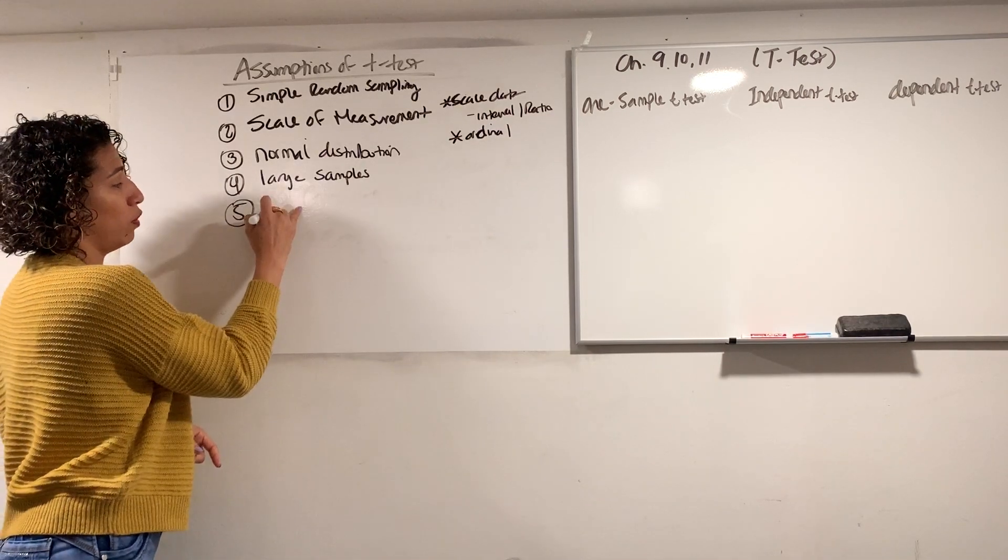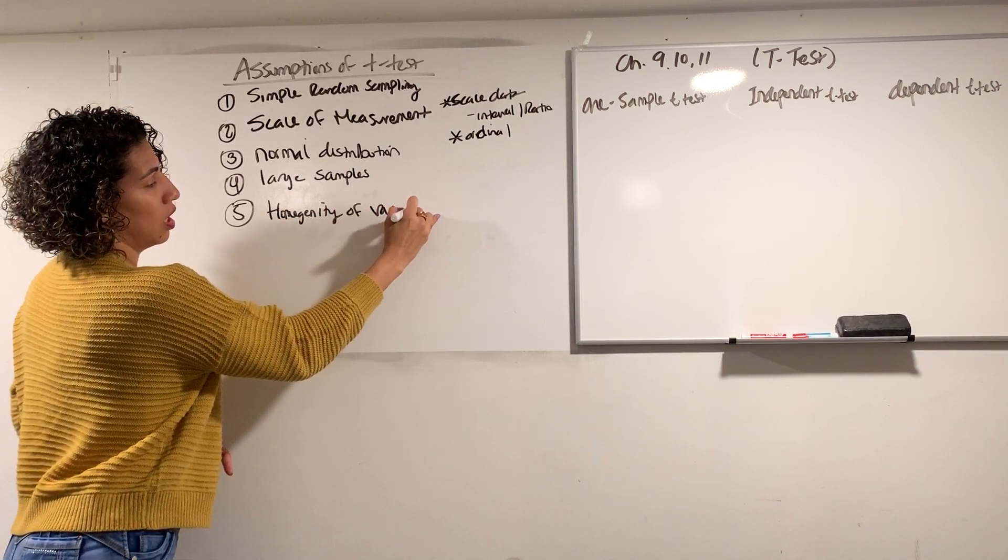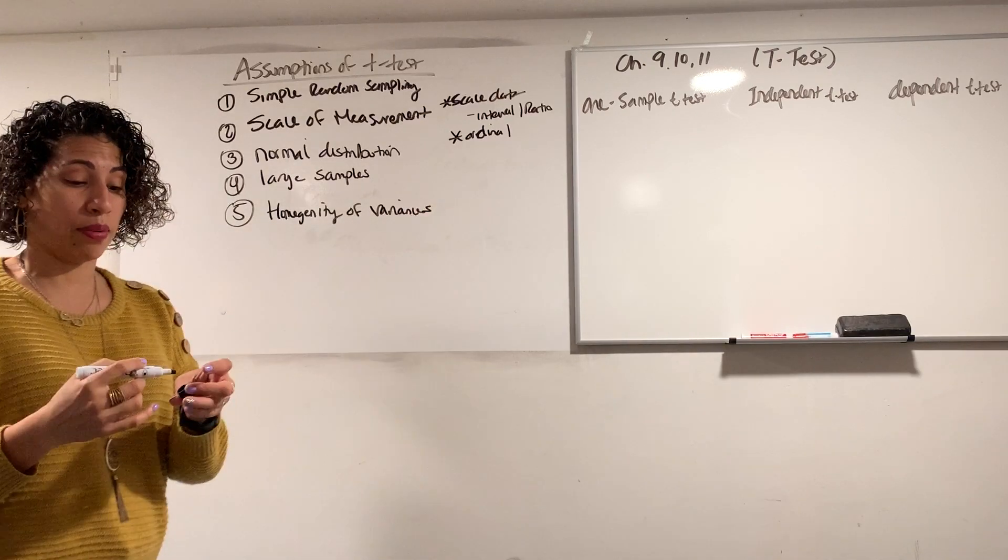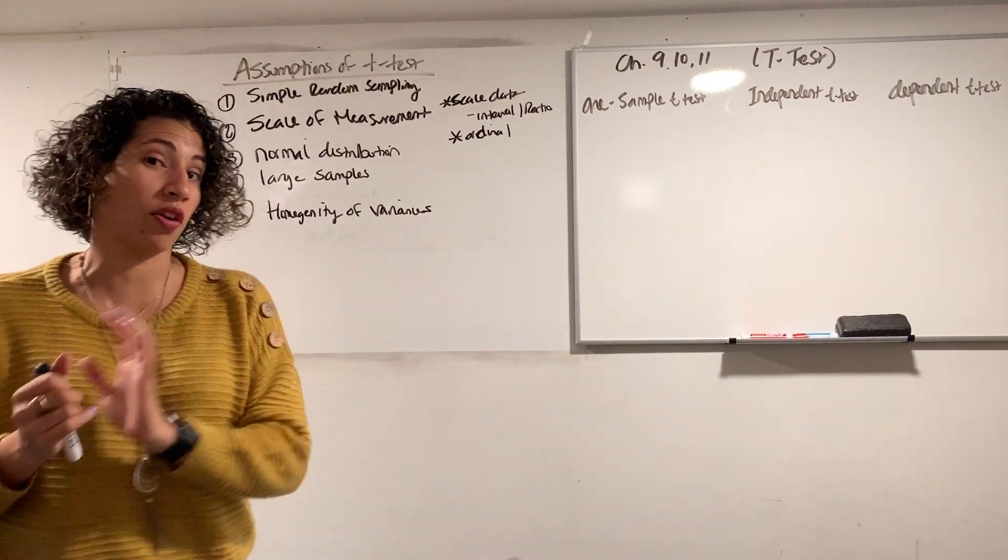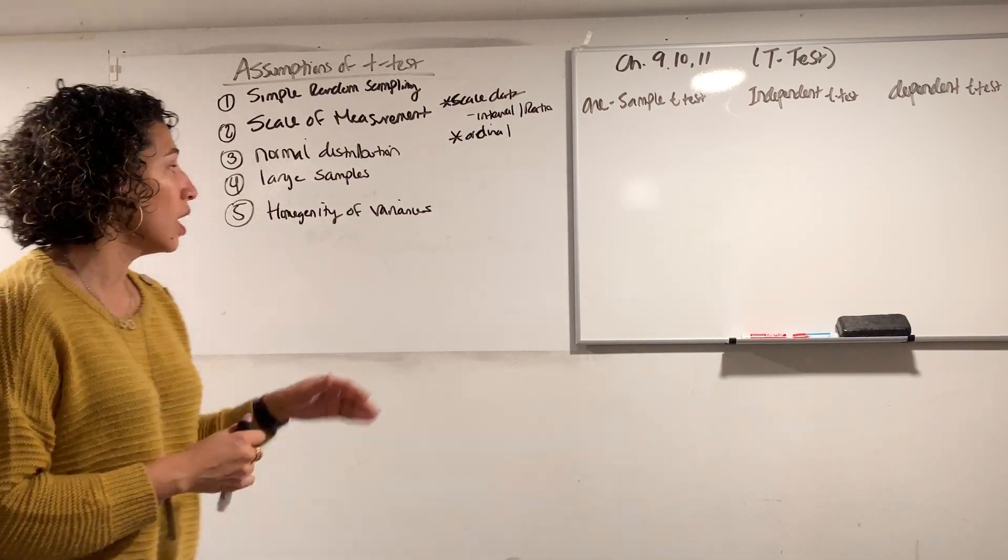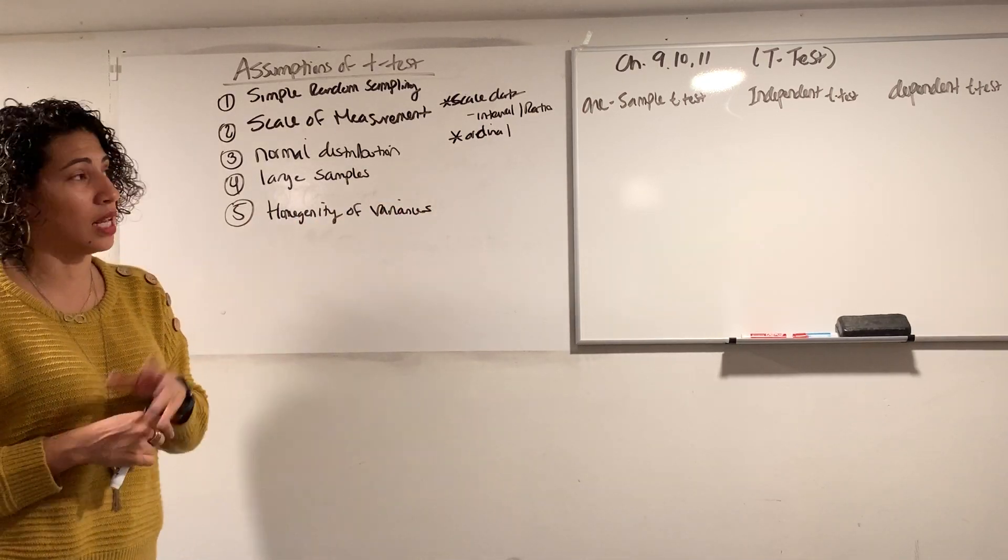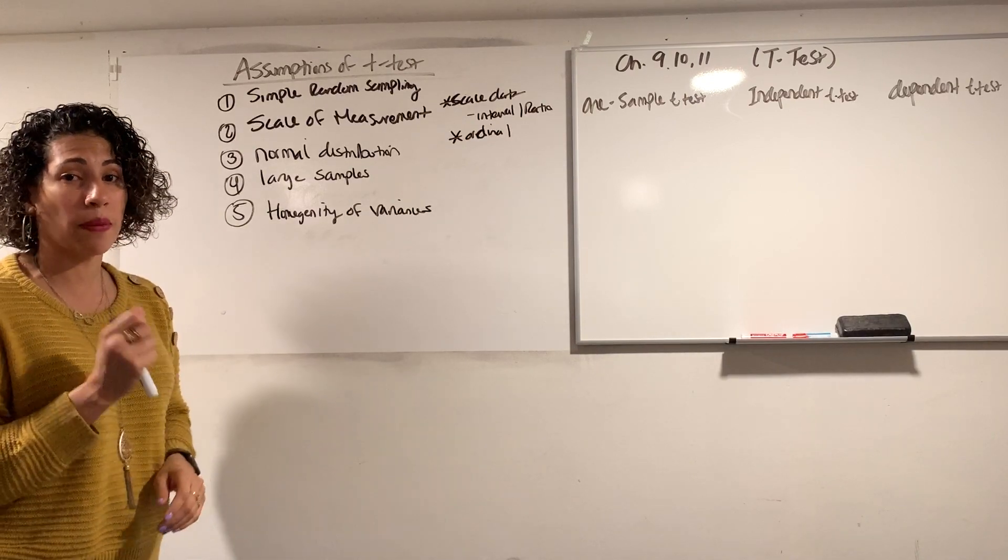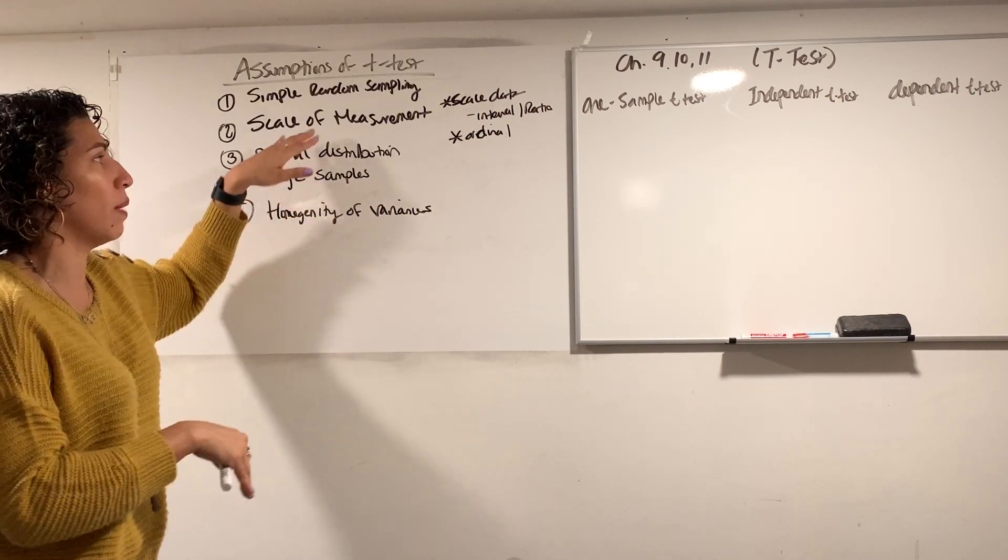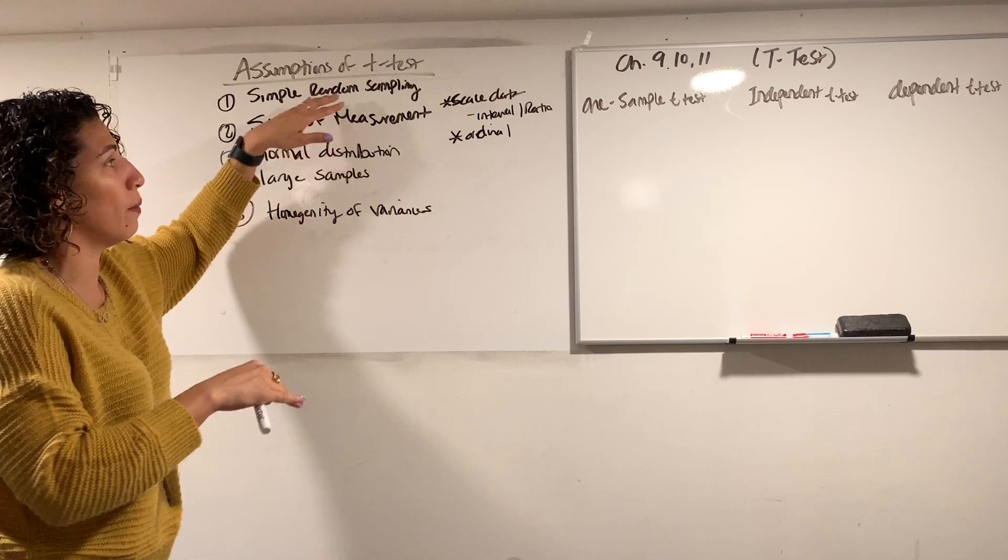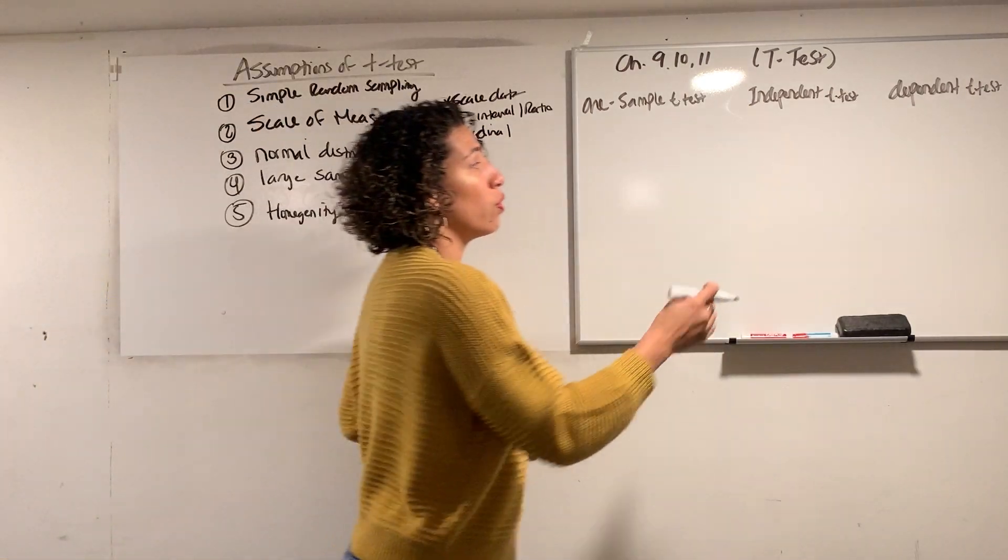And the last one is something called homogeneity of variances. If we talk about homogenous samples, homogenous samples means the fact that they're the same internally. So all males, all females are all chaotic and all chaotic. We want to make sure that they're all the same. This really holds true more than the one sample. It holds true in the independent and the dependent, but more specifically, the independent t-test. Because large samples, all of them should have large samples. Normal distribution, all of them. Scale of measurement, the type of data used, all of them. Random sampling, all. But this particular one, homogeneity of variances, really talks about this.